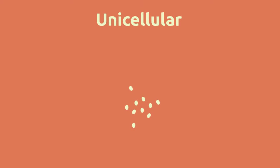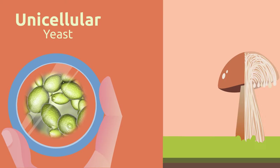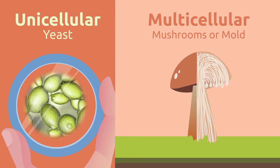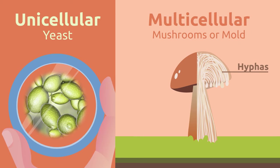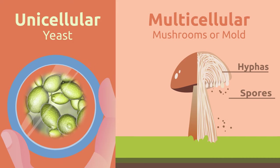Some fungi, like yeasts, are unicellular microorganisms not visible to the naked eye — to observe them we need to use a microscope. Other fungi are multicellular, composed of many cells grouped together forming long thin strings called hyphae. Hyphae form the reproductive structures. Mushrooms or mold contain spores by which fungi reproduce.